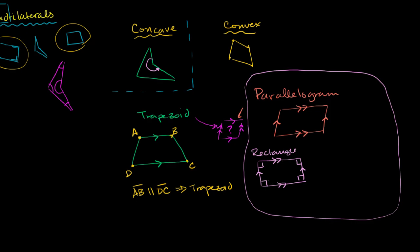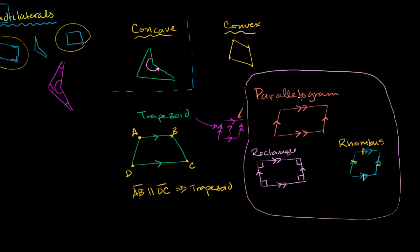A parallelogram has opposite sides parallel and four right angles makes it a rectangle. Now, if we have a parallelogram where we don't necessarily have four right angles but all four sides have equal lengths, then we're dealing with a rhombus. In a rhombus, that side is parallel to that side, this side is parallel to that side, and all four sides have equal lengths. All rhombi are parallelograms, all rectangles are parallelograms, but you cannot assume all parallelograms are rectangles or rhombi.